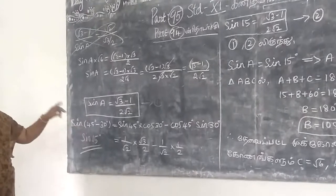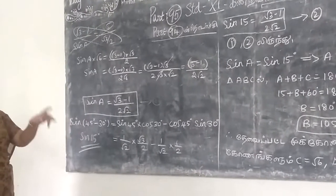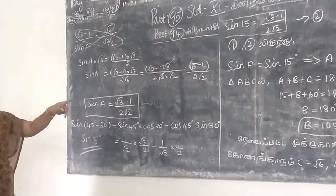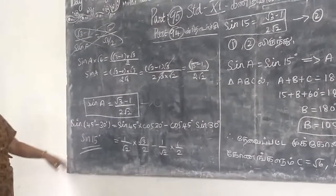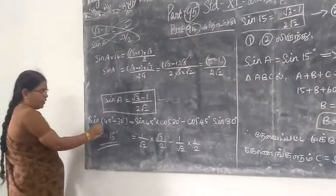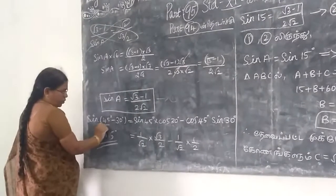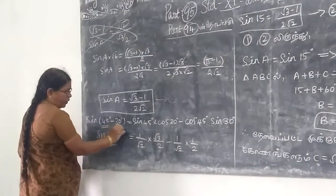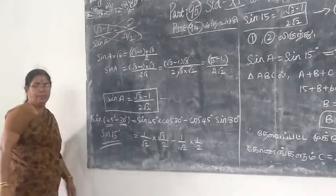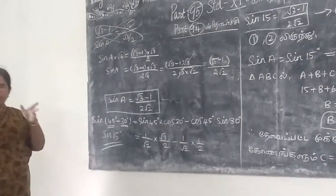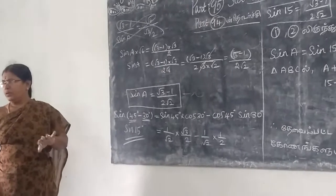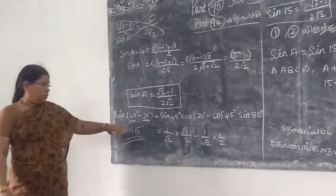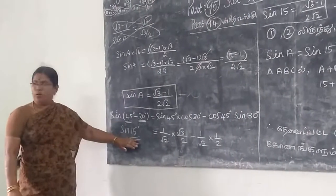Next one is the 15 degree value. First we want the value sin 15, which is equal to sin(45 minus 30). So 45 we are going to do, and then the value.